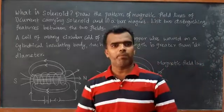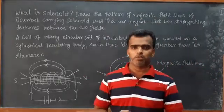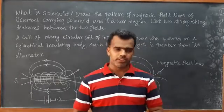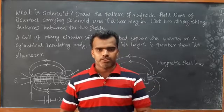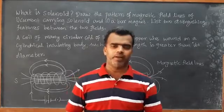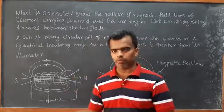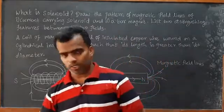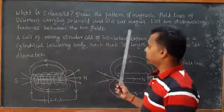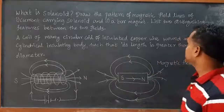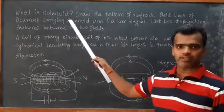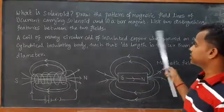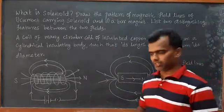Hello everyone, welcome to the board question and answers. Chapter number 13: Magnetic effect of electric current. The first question is: what is solenoid? Draw the pattern of magnetic field lines of a current-carrying solenoid and a bar magnet. List two distinct features between the two fields.